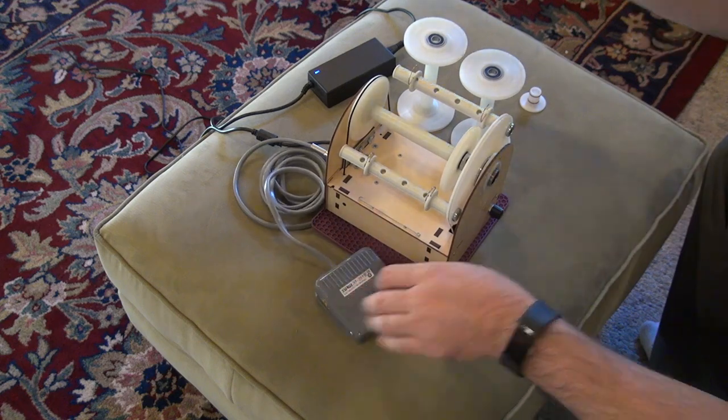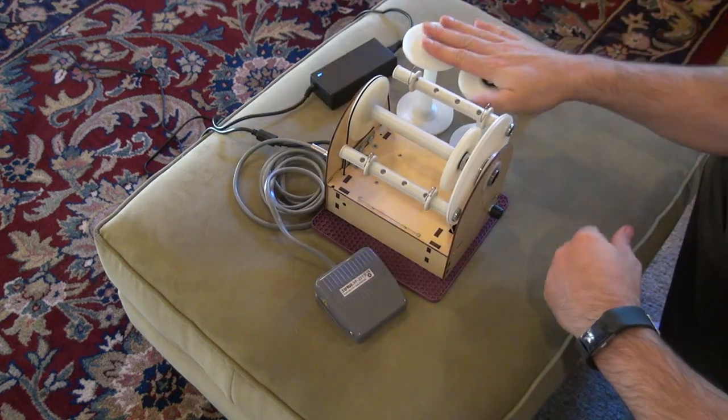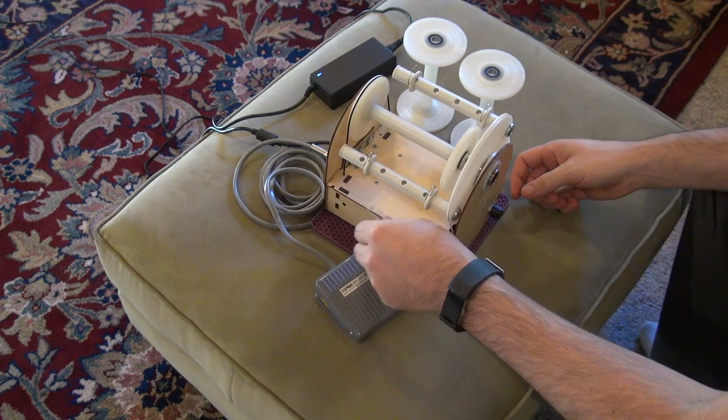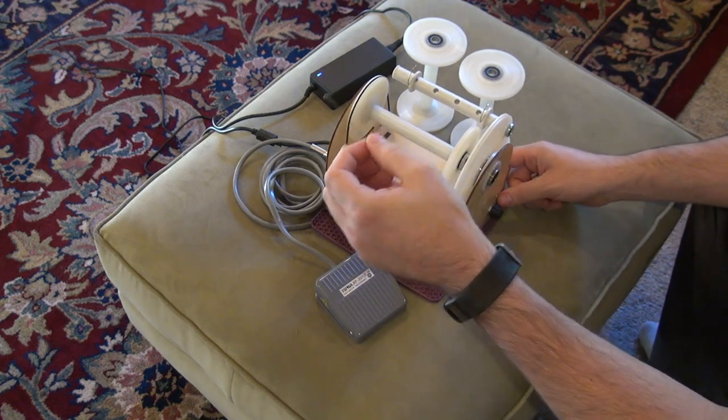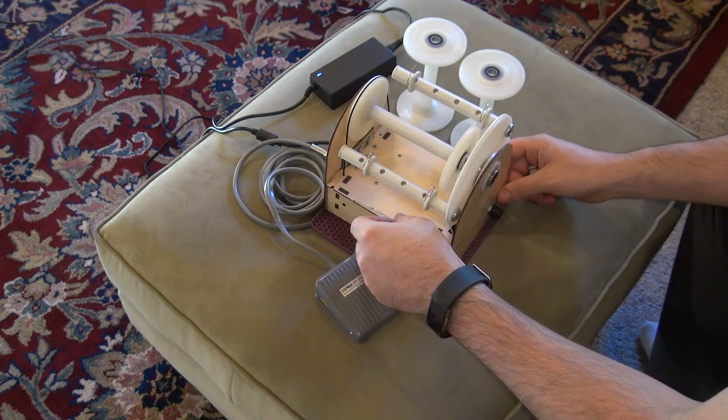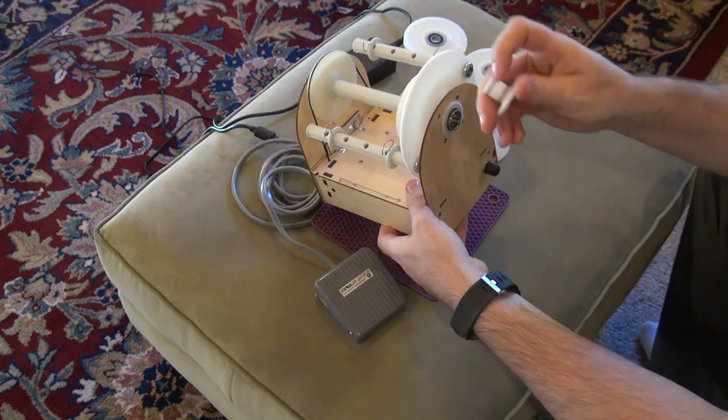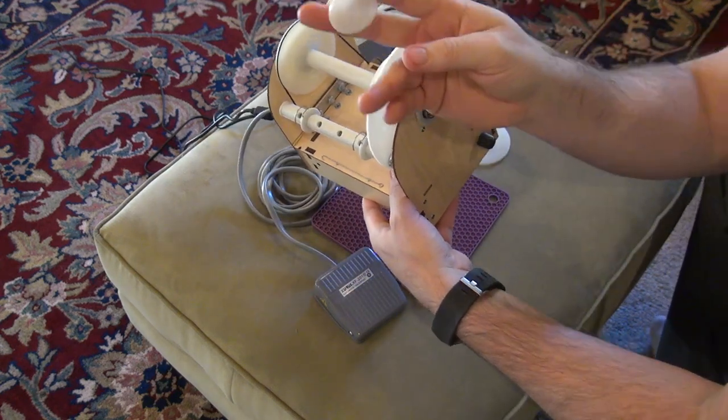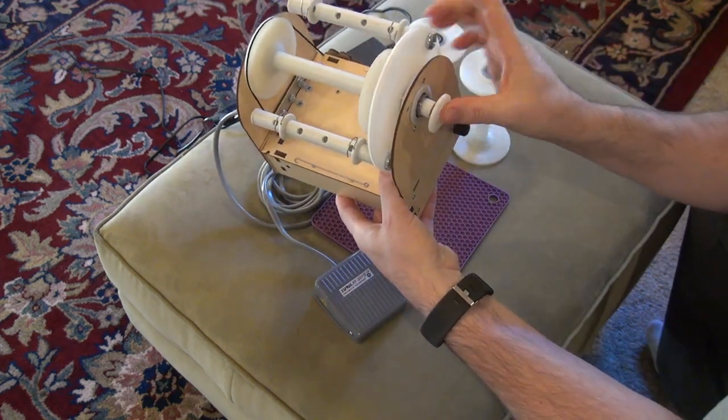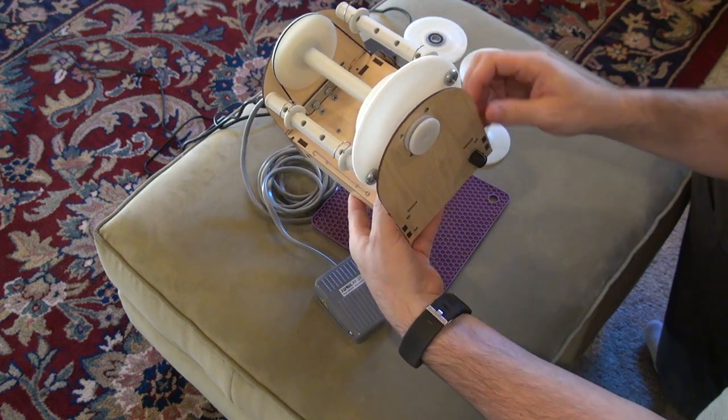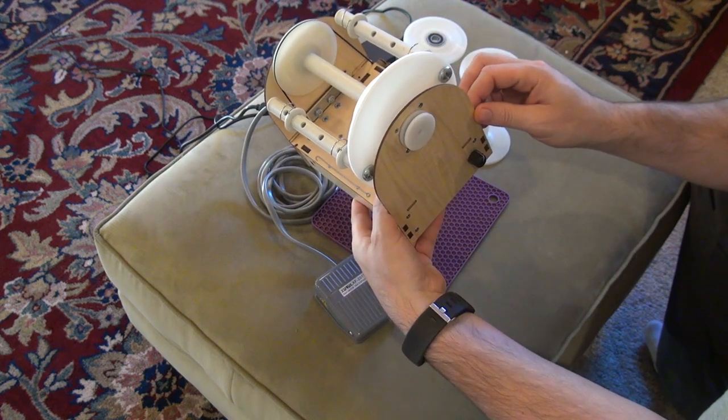There's a foot pedal, a power supply, three bobbins, a little orifice hook to help thread the yarn through the bobbin, and there's this reducer which helps reduce wobbling of the yarn when you're spinning really thin singles.